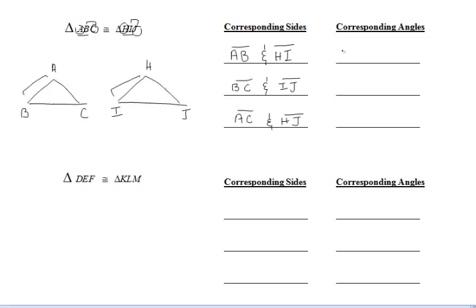Now we can list our corresponding angles. Once again, you can use the original statement and recognize that A and H are in the same location, so angle A corresponds with angle H. You can also use your diagram to recognize that as well, since A and H are corresponding angles in the same location. B and I correspond, and also C and J — they're the last letters in those statements. And if you look at the diagram we drew out, C and J are also in the same location.